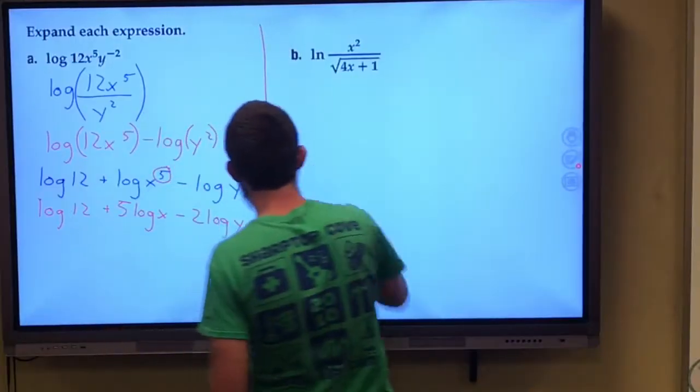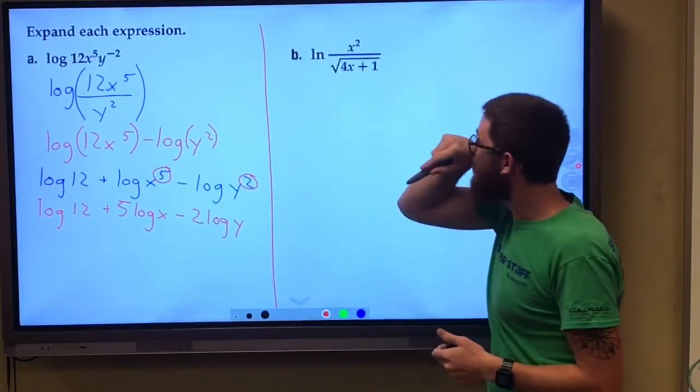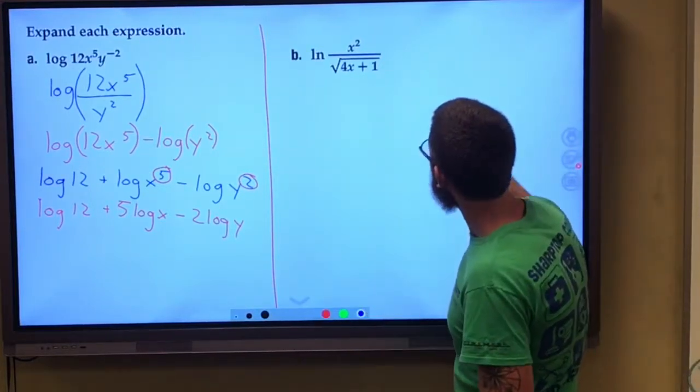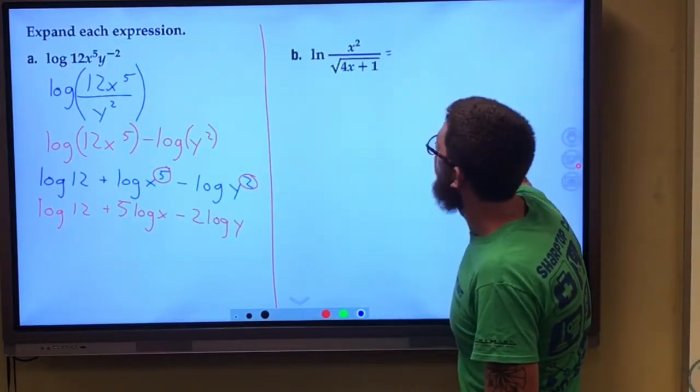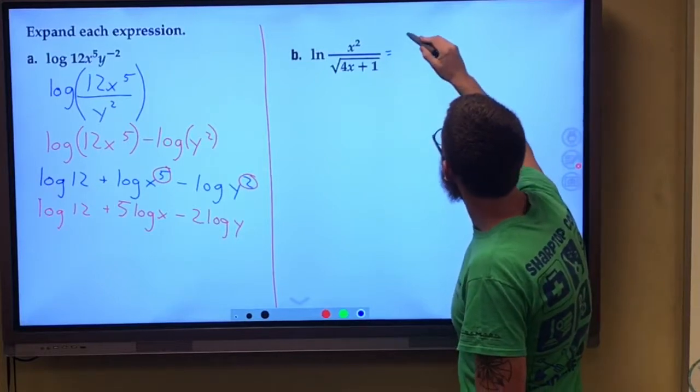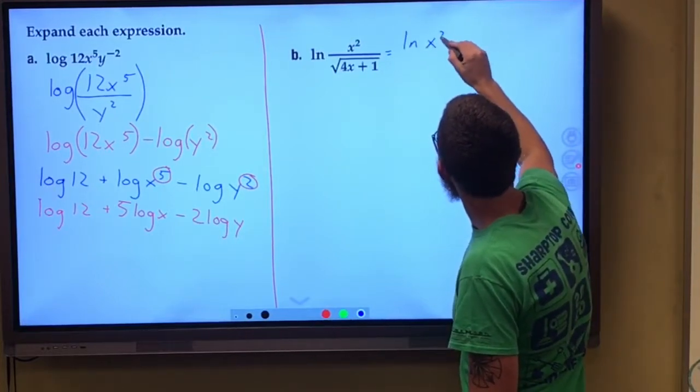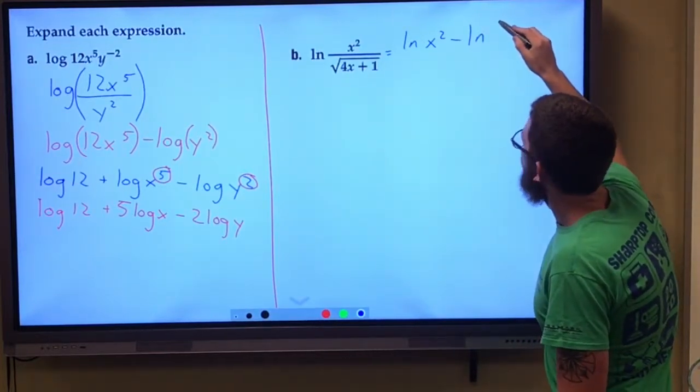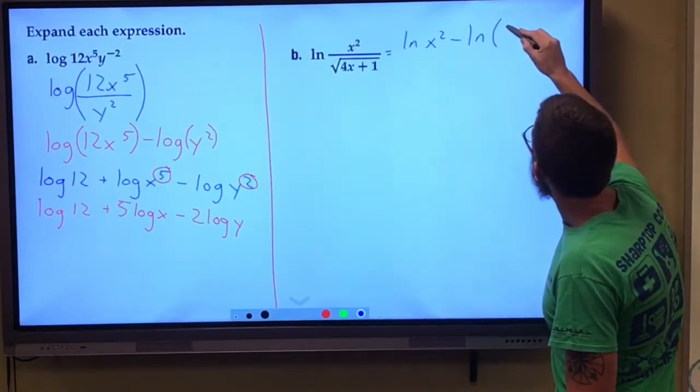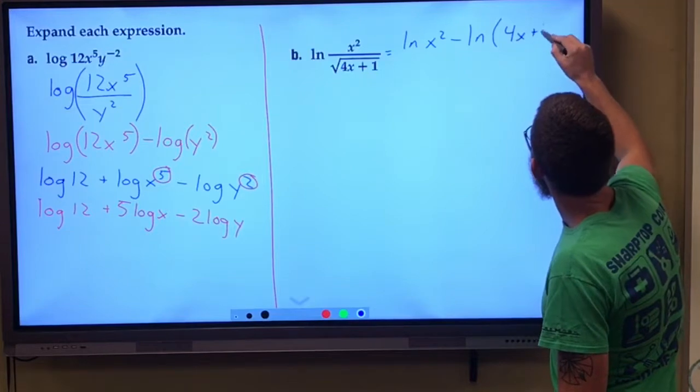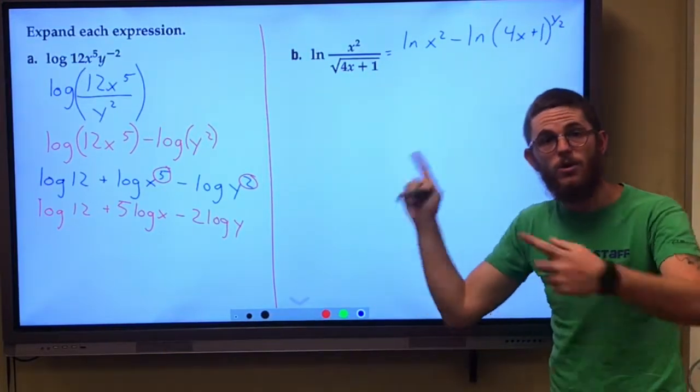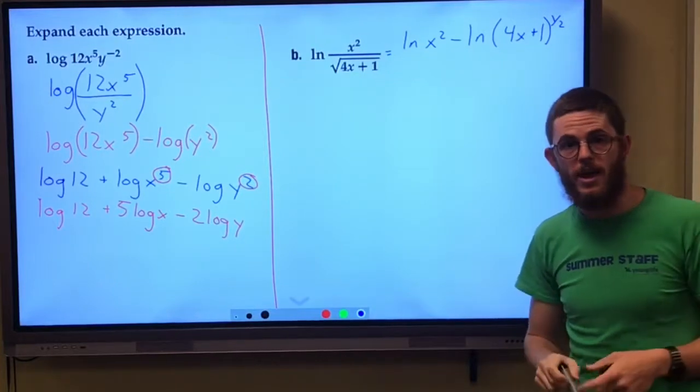Over here, natural log of x squared over the square root of 4x plus 1. All right. I'm going to jump on a quotient rule first. Natural log of x squared minus the natural log of 4x plus 1 raised to the power of 1 half. I'm just going to go ahead and take that square root and use a 1 half to represent that.